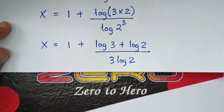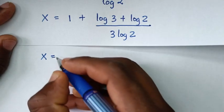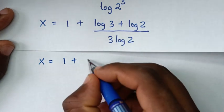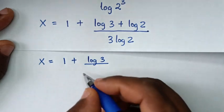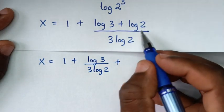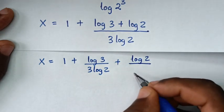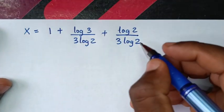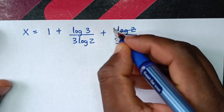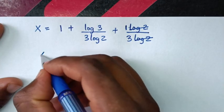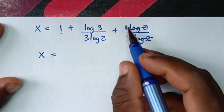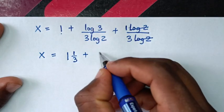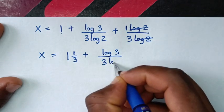Then in the next step it will be x is equal to 1 plus — here we'll divide by 3 log of 2 in this part and this part. So it will be log of 3 over 3 log of 2 plus log of 2 over 3 log of 2. Then to simplify, this log of 2 will cancel this log of 2, so it will be 1 over 3. Then x is equal to 1 plus 1 over 3, plus log of 3 over 3 log of 2.